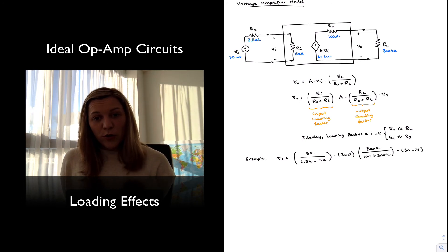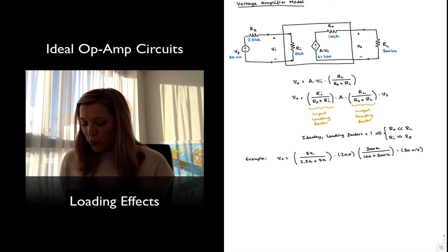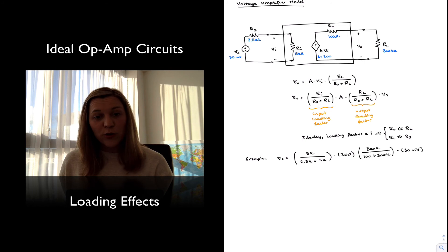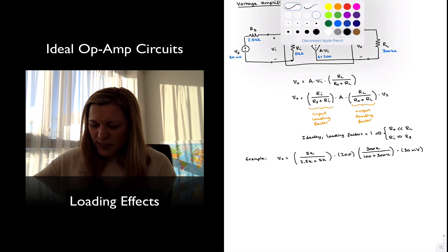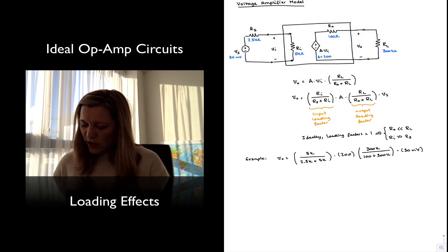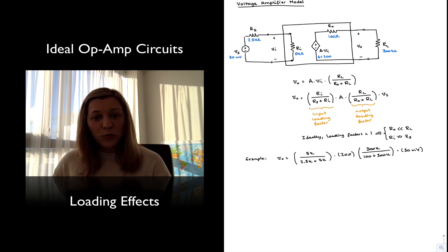Now, if my loading factors were both equal to 1 or close to 1, I would expect my output voltage to be something close to 200 times 30 millivolts, or something close to 6 volts. In reality, we can see that in the case of the output loading factor, because the load resistance is so much larger, it's several orders of magnitude larger than the output resistance of the op-amp, this is actually approximately equal to 1.